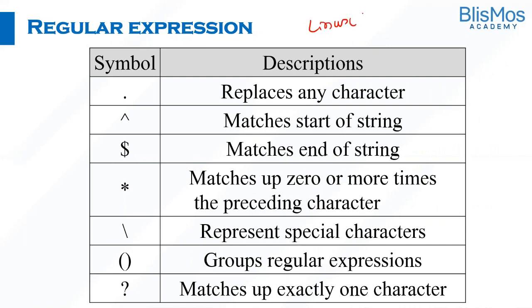In order to help with pattern matching, we have different symbols like dot, caret, dollar, star, backslash, braces, and question mark. Dot replaces any character. Caret matches start of a string. Dollar matches end of a string. Star matches zero or more times of the preceding character. Backslash represents special characters. When you want to group different expressions together, you can use braces. And to match exactly one character, use the question mark.